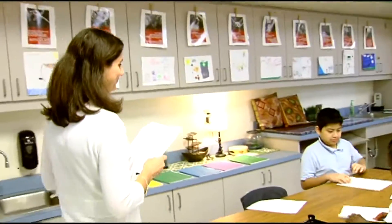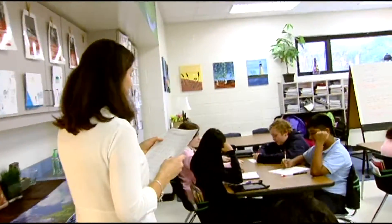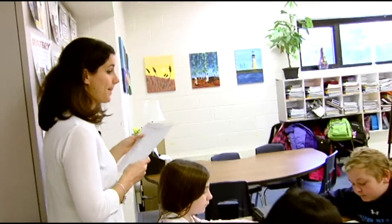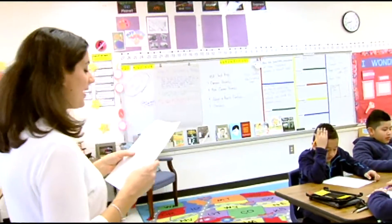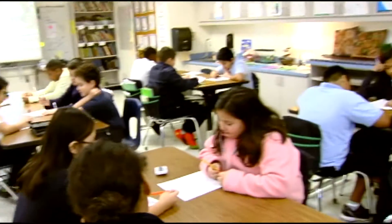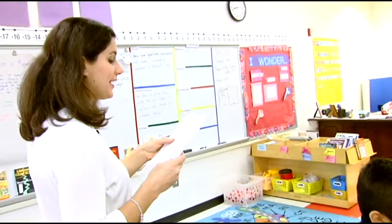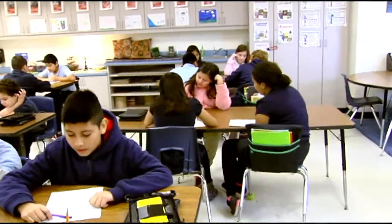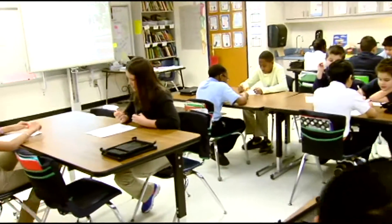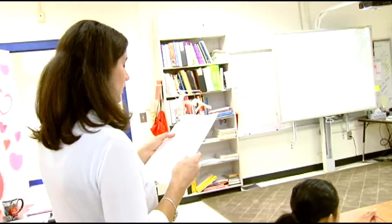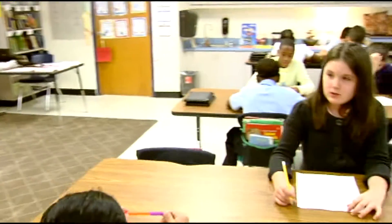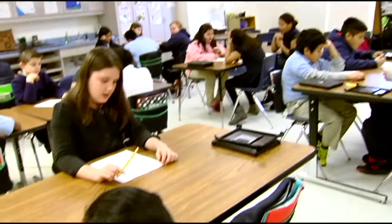Okay, put your finger on the first problem in the first row. 11 times 7 equals 77. 2 times 0 equals 0. 12 times 4 equals 48. 5 times 2 equals 10. 10 times 8 equals 80. 9 times 6 equals 54. 7 times 2 equals 14. 10 times 3 equals 30. 4 times 1 equals 4. 12 times 2 equals 24. 8 times 5 equals 40.